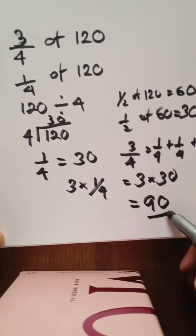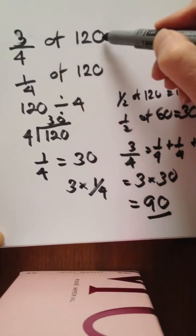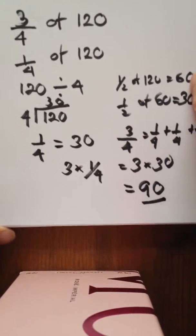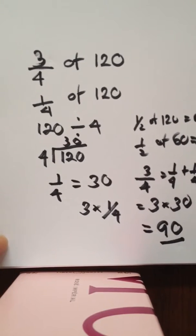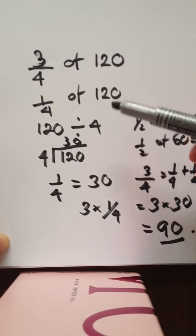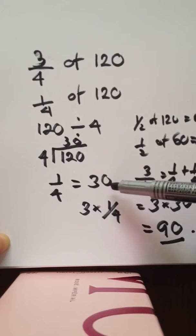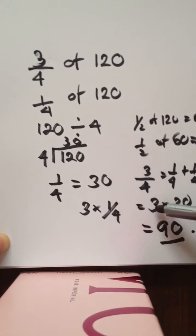Three quarters of 120 is 90. The method being: find a quarter first, then to get three quarters, multiply what one quarter was by three. Let's do something similar on another problem.